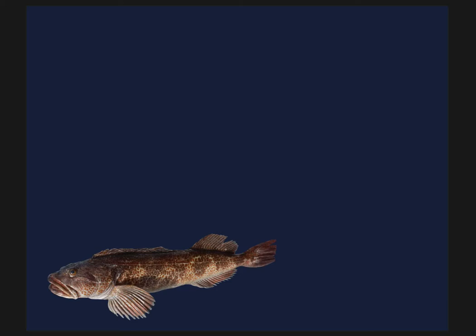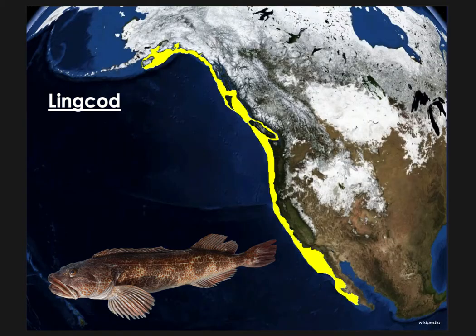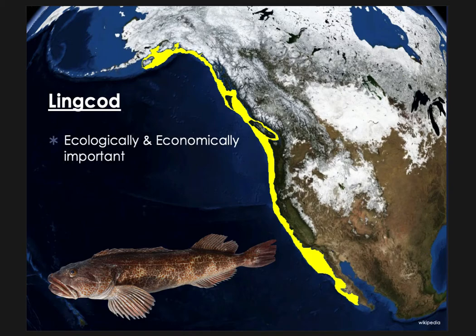Another important member in the groundfishes group along the US West Coast are lingcod. Lingcod range from Kodiak Island, Alaska to Point San Carlos, Baja California, Mexico. They are an ecologically important species as a common top marine predator in the rocky reef habitat along their range. Economically, they are valuable in the recreational and commercial fisheries.